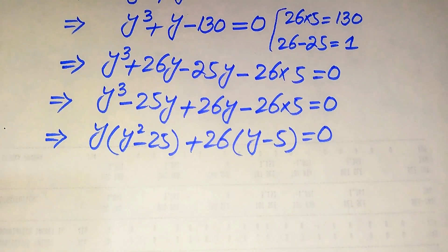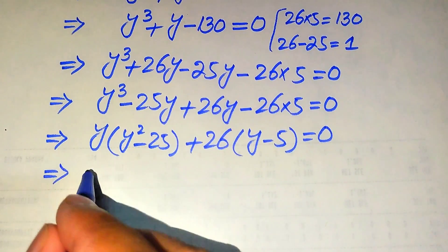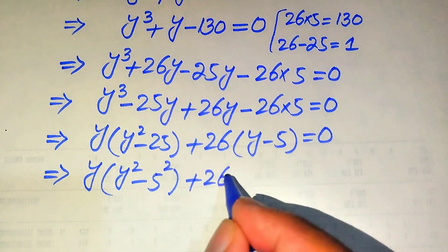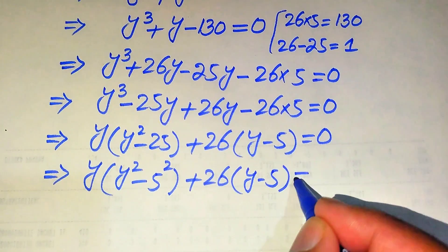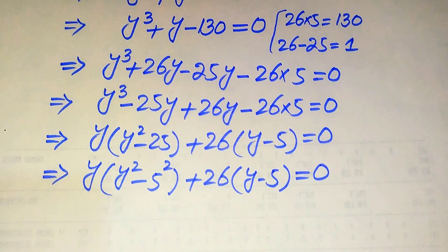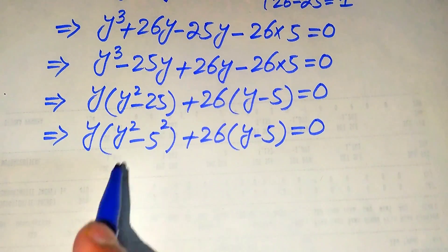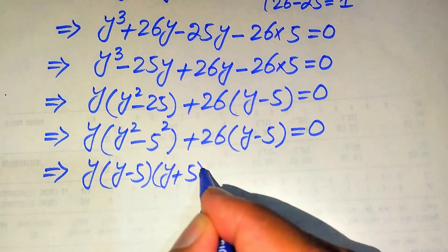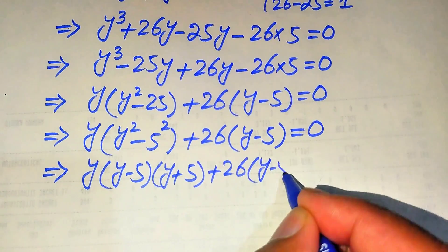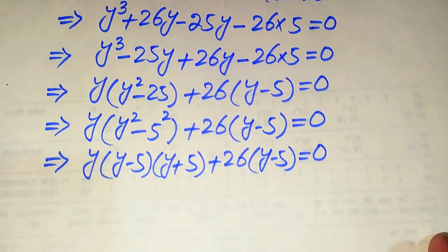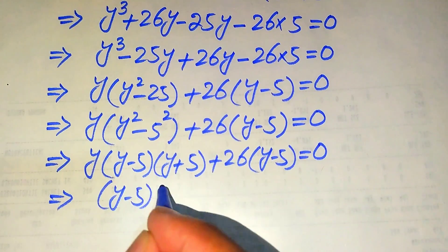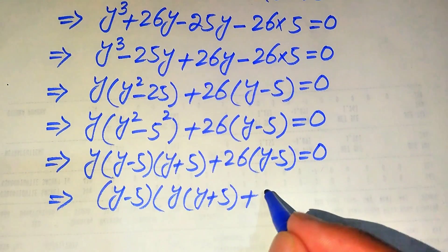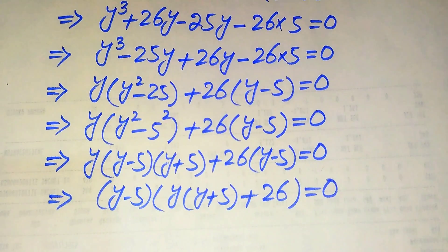We simplify further by writing y² − 25 as y² − 5², then applying the difference of squares formula to get (y − 5)(y + 5). So the equation becomes (y − 5)(y + 5) + 26(y − 5) equals 0. Taking (y − 5) common from both terms gives (y − 5)(y + 5 + 26) equals 0, which is (y − 5) times y(y + 5) plus 26 equals 0.